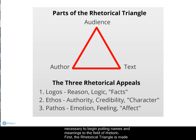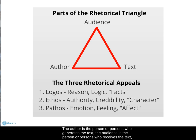First, the rhetorical triangle is made up of three parts: the author, the audience, and the text. Every persuasive situation contains these three aspects. The author is the person or persons who generates the text, the audience is the person or persons who receives the text, and the text is the message or messages transmitted between the author and the audience.